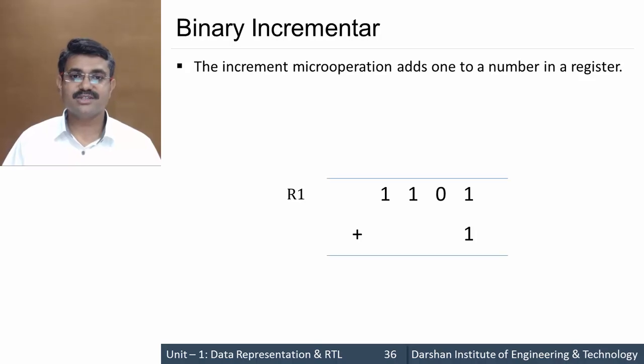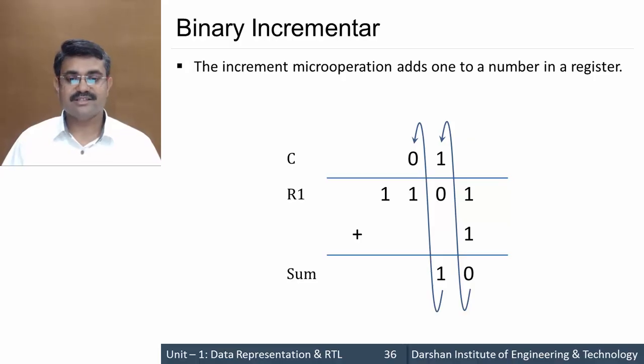By performing this addition we get the result: 1 plus 1 becomes 0 sum, carry 1. Again 1 plus 0, so sum would be 1, carry would be 0. 0 plus 1, sum would be 1, carry would be 0. And 0 plus 1, so we have sum 1 and carry 0. This is how increment operation takes place.